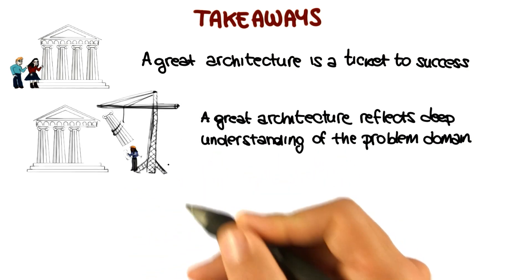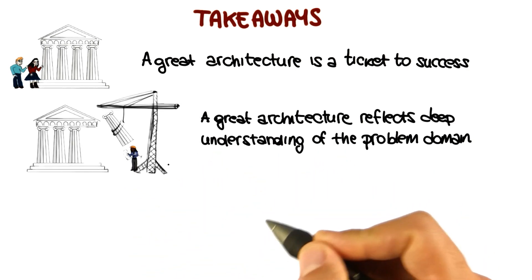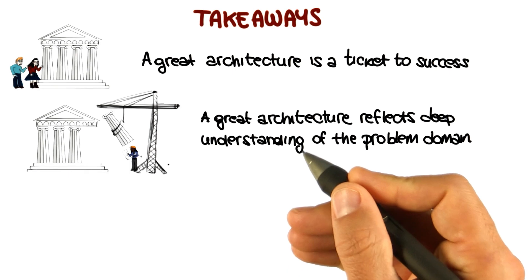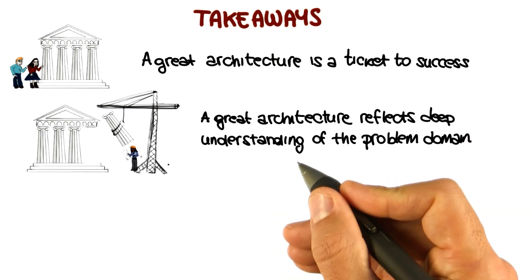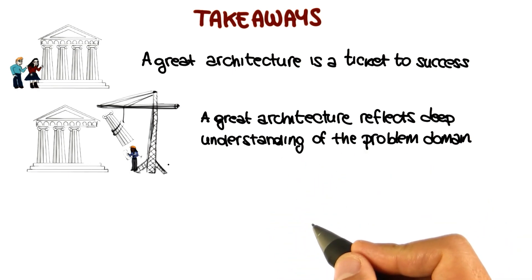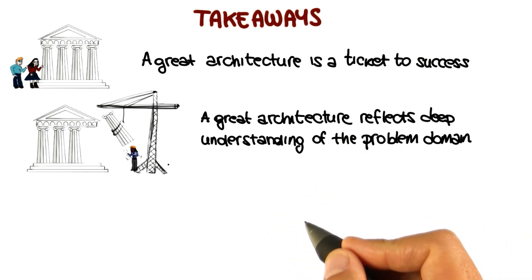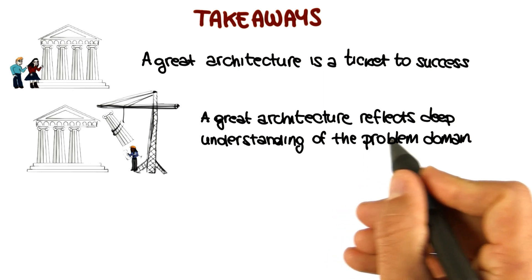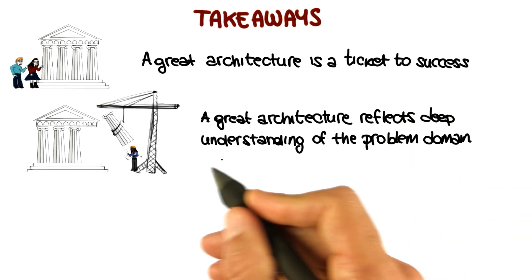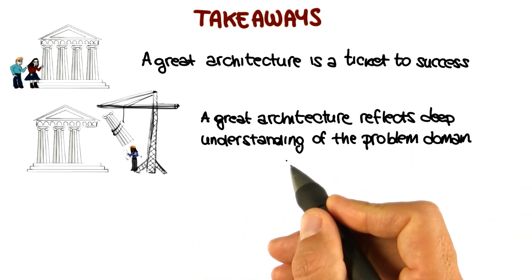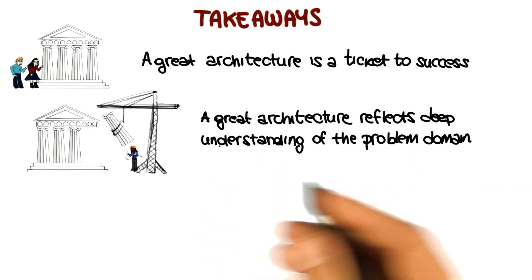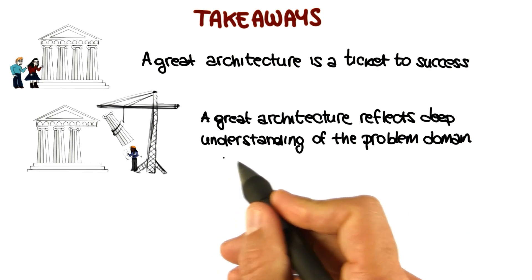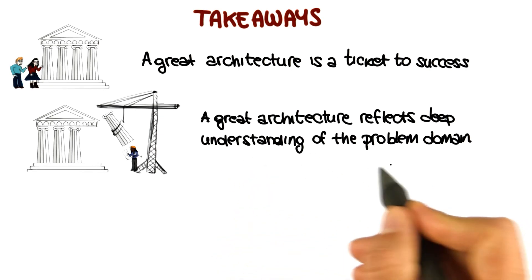The second message is that an architecture cannot come about in a vacuum. You need to understand the domain of the problem that you're trying to solve in order to define an architectural solution that fits the characteristics of the problem. So a great architecture reflects a deep understanding of the problem domain.